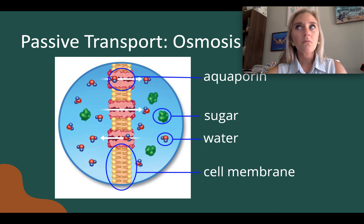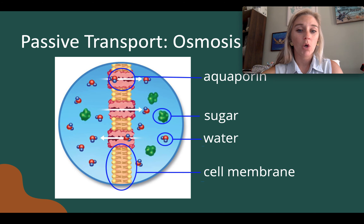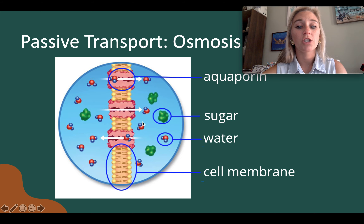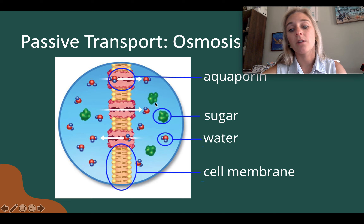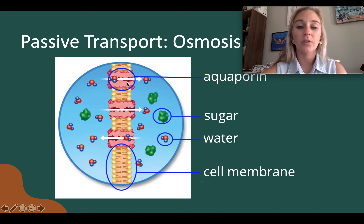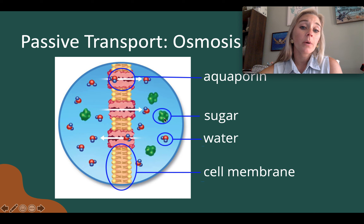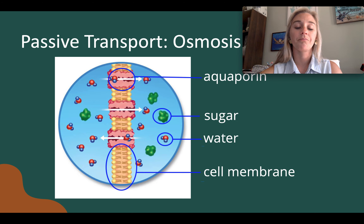Osmosis is the movement of water — that is all that is moving. Sugar cannot pass across the membrane because it is much too large. In this diagram, the right side has a higher concentration of solute, which is sugar, and therefore a lower concentration of water. The goal is to move more water across to balance out the sugar. White arrows show water moving through aquaporins — specialized proteins for moving water — from a high to a low concentration. Sugar is not moving because it cannot pass through the membrane.